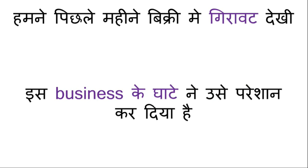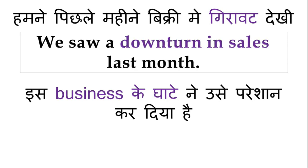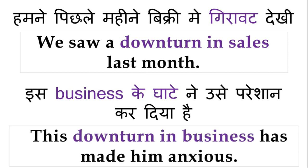ہم نے پچھلے مہینے sales میں گراوٹ دیکھی — اس business کے گھاٹے نے اسے پریشان کر دیا ہے. 'We saw a downturn in sales last month.' Downturn کا مطلب ہوتا ہے گراوٹ، business کا گھاٹا. 'This downturn in business has made him anxious.' Anxious مطلب extremely worried about something and not being able to decide what to do next.